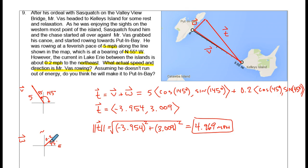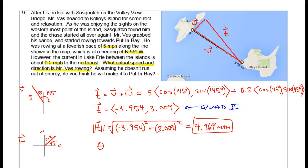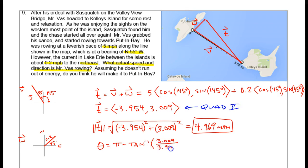Next we just have to find the angle of the true vector. From its component form we can see the horizontal component is negative and the vertical component is positive — that puts us in quadrant 2. We need to be careful in quadrant 2: if I just do the inverse tan of 3.009 divided by negative 3.954, I won't get the right answer. What I do is pi minus the inverse tangent of the y-coordinate divided by the absolute value of the x-coordinate. That gets me 142.7 degrees.